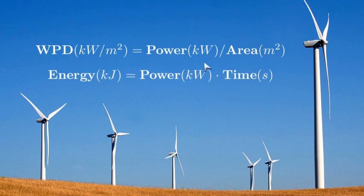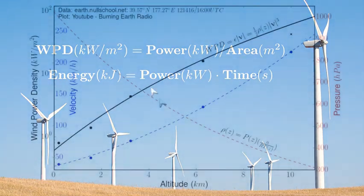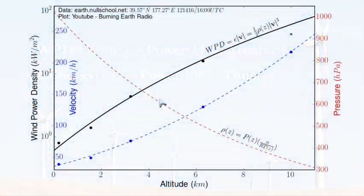I've labeled the units here. Kilowatts is power, meters squared is area, kilojoules is energy, and seconds is time.